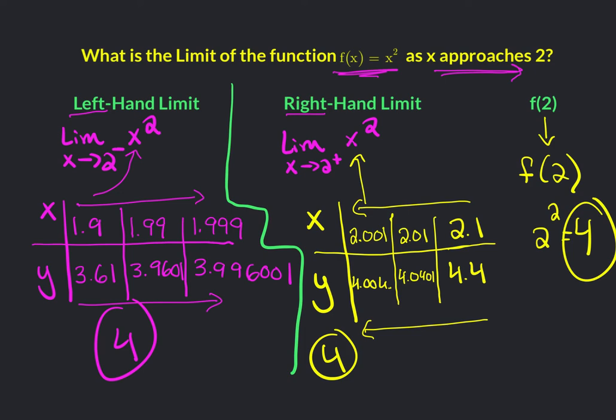Now, common mistake is, oh, 4, 4, 4. That must mean that the limit as x approaches 2, x squared always just the same as f of 2. And no, it is not.